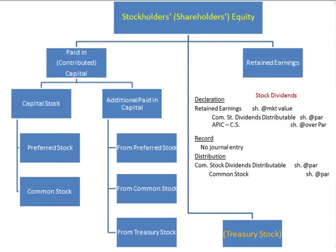Students often get confused on the effect of declaration and distribution of common stock dividends. To have a very good understanding of what is going on, it is important to have a handy diagram of the whole equity section. I also recommend keeping these journal entries right in front of you. If you take a close look at these journal entries, you will notice that every single account affected is actually an equity account — there are no assets or liabilities. So everything that is going on here will involve only equity and nothing else.